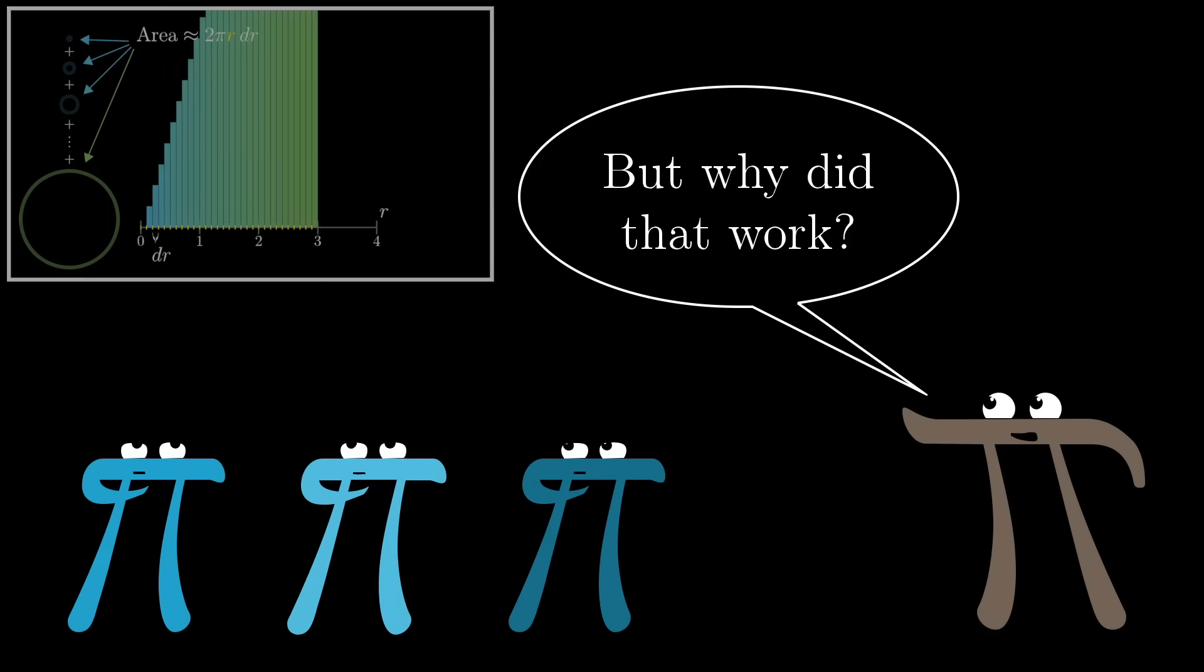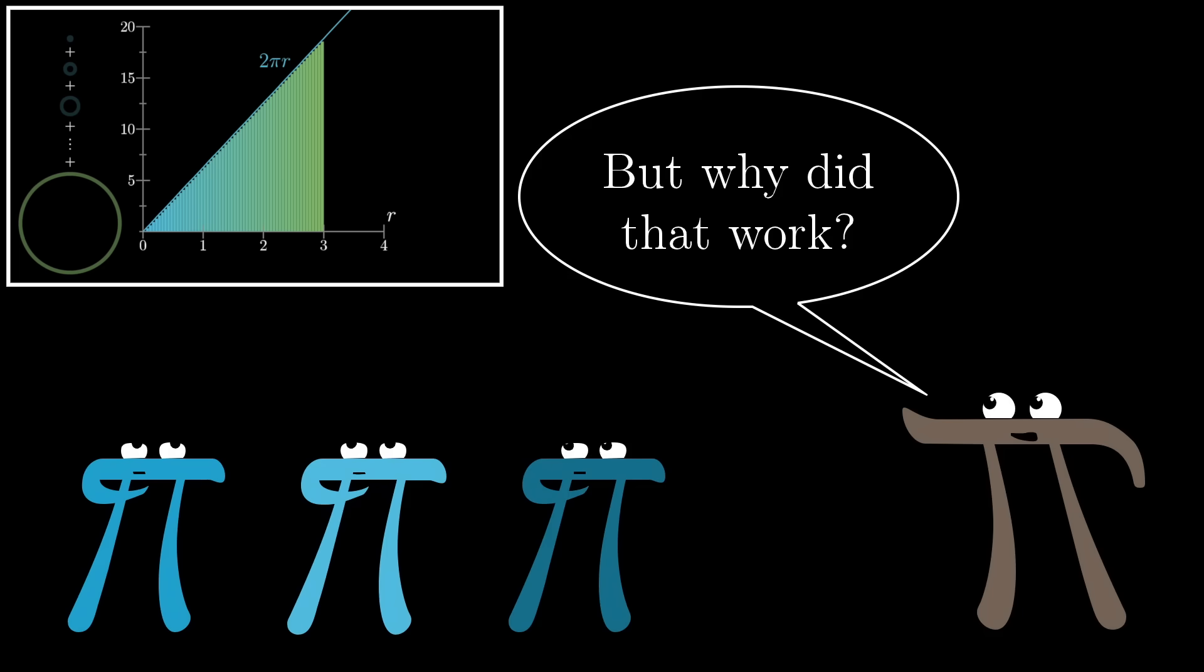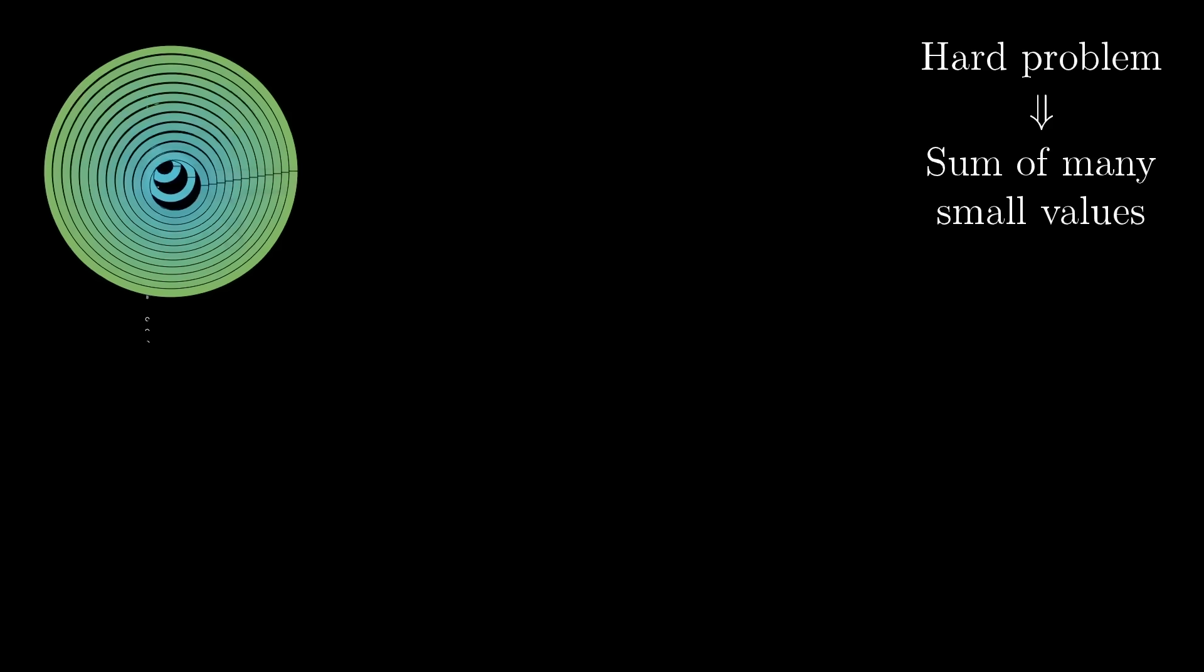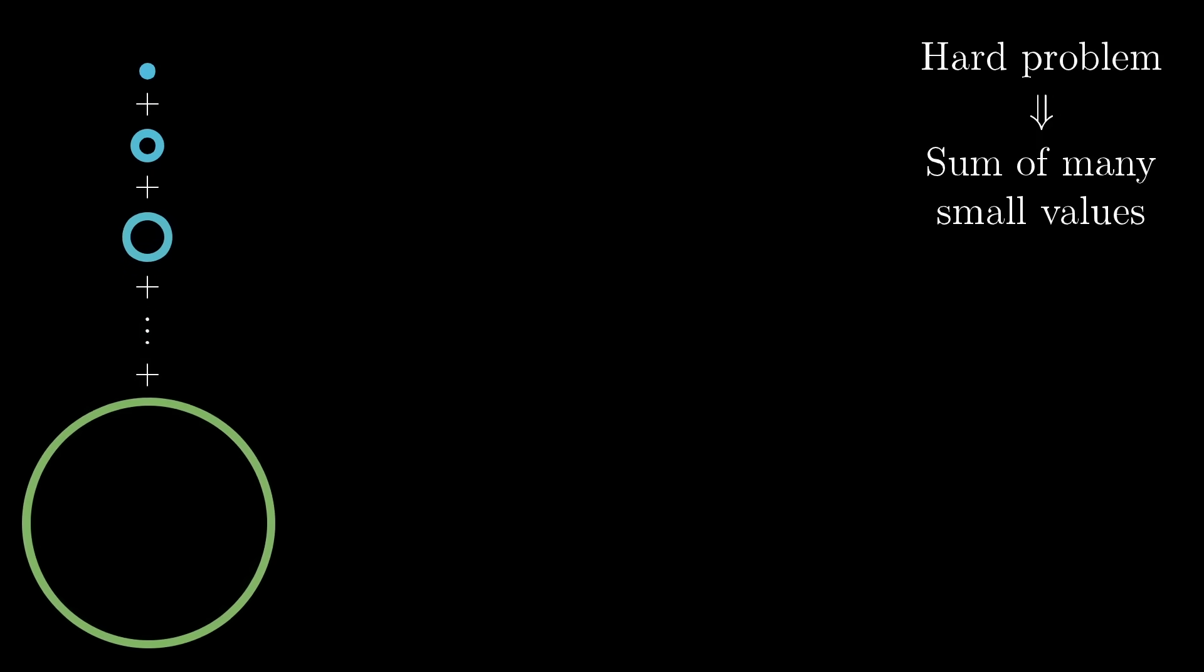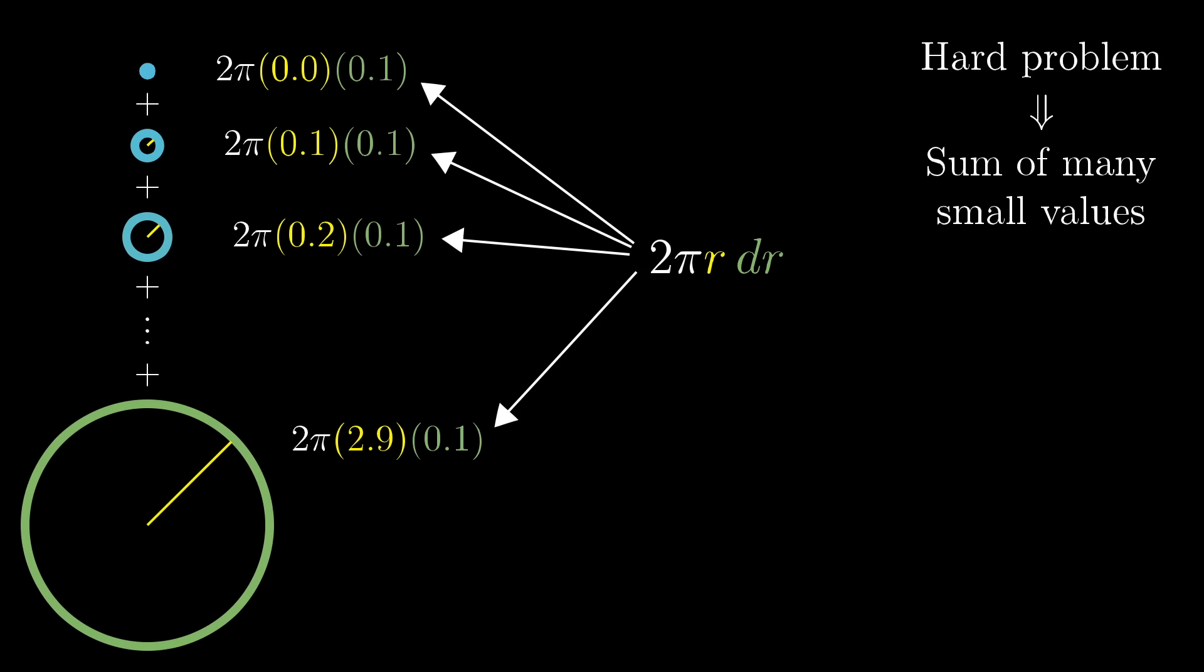Because the way that we transition from something approximate to something precise is actually pretty subtle, and it cuts deep to what calculus is all about. You had this problem that could be approximated with the sum of many small numbers, each of which looked like 2 pi r times dr, for values of r ranging between 0 and 3.